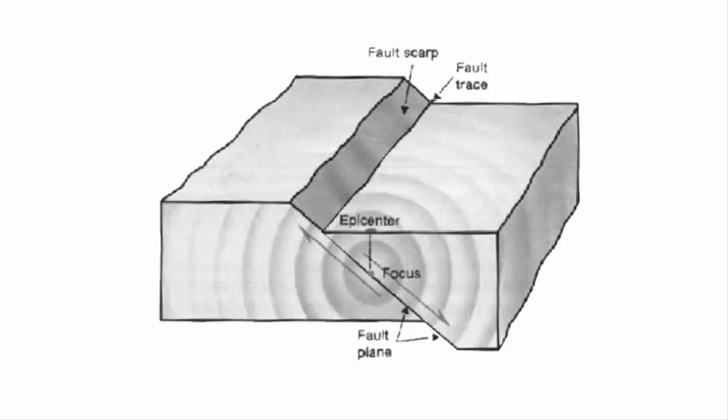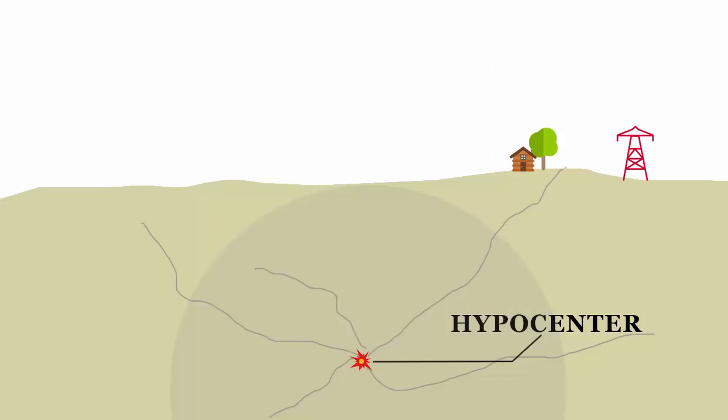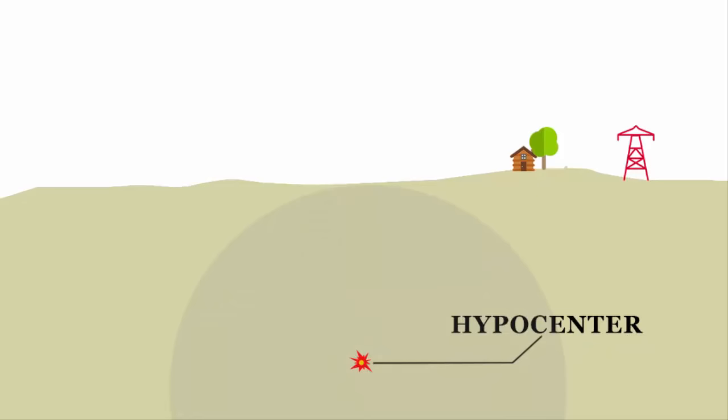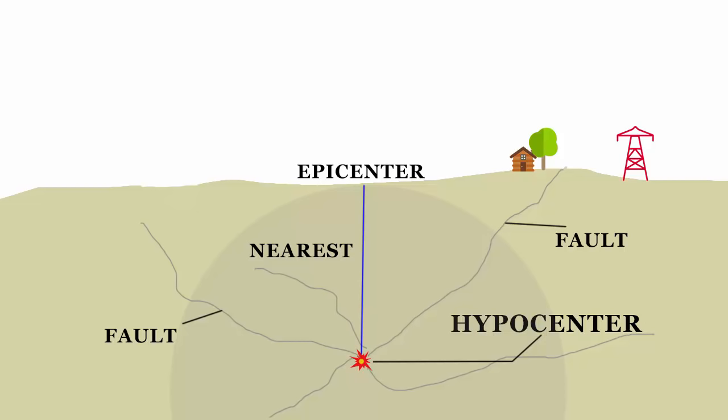This causes the release of energy, and the energy waves travel in all directions. The point where the energy is released is called the focus of an earthquake, or the hypocenter. The energy waves traveling in different directions reach the surface. The point on the surface nearest to the focus is called the epicenter. This place is the first one to experience the waves.